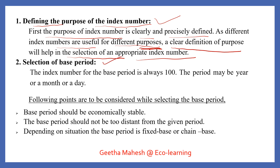The next step is selection of the base year. The value of the index number for the base year is set at 100. The base year serves as the reference point — it could be a year, a month, or even a specific day.